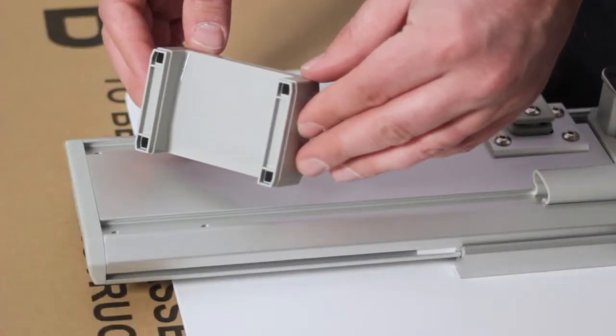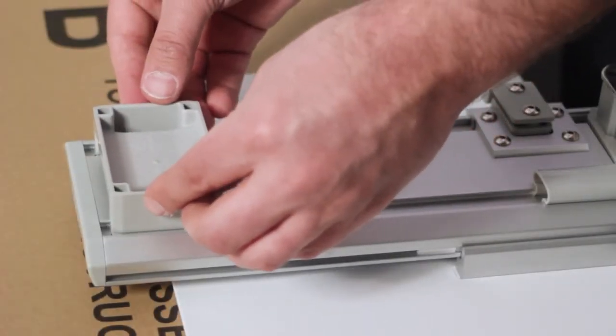Step 6. Set the keyboard tray spacer in alignment to the holes on the column arm.